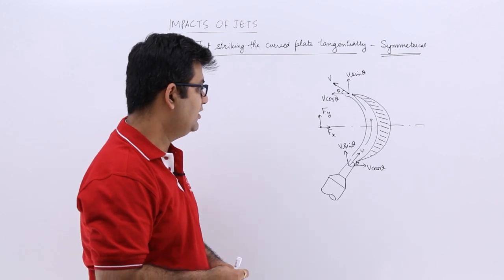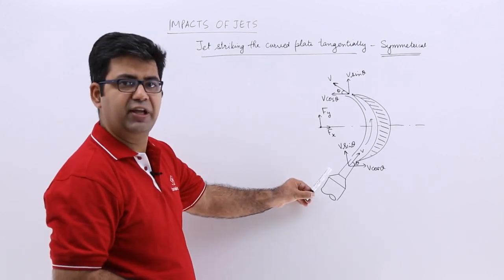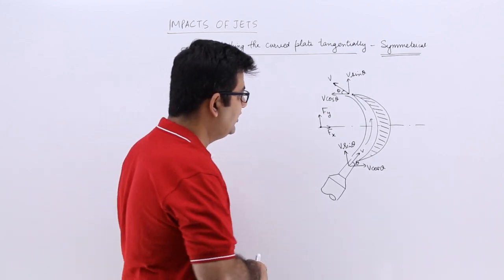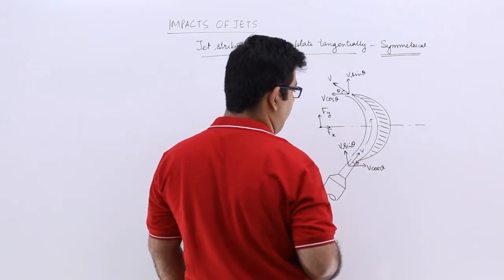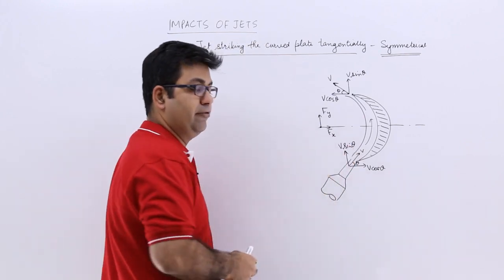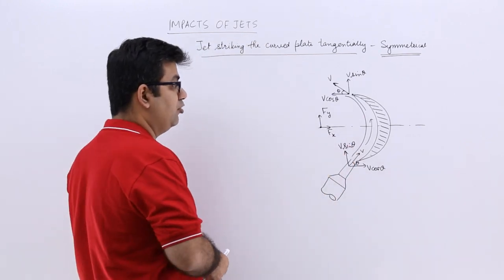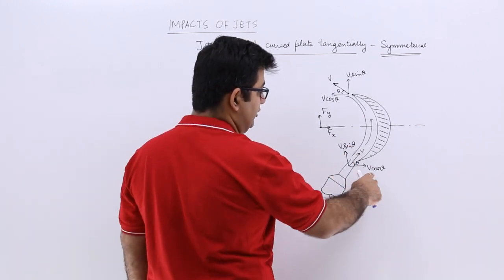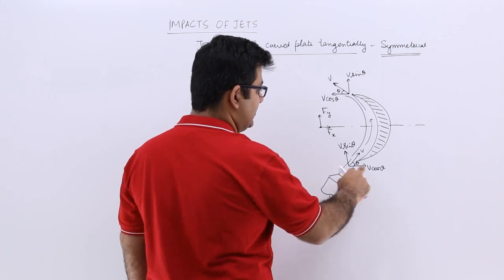Now let us say that the direction of the flow of the jet is making an angle theta with the horizontal direction. So this velocity v, which is in the direction of flow of the jet, will have two components: v cos theta and v sin theta in x and y direction.